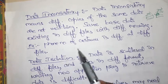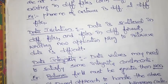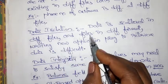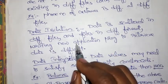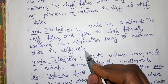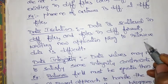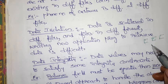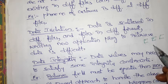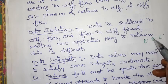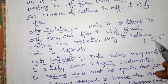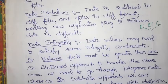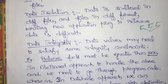The next problem is data isolation. Data is scattered in different files and files are in different formats. Writing a new application program to retrieve the data is very difficult. Each and every file is formatted in a different way, so retrieving information from these files is very difficult — that is data isolation.